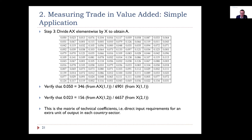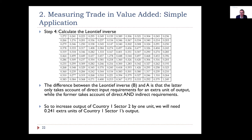This gives us matrix A — the matrix of technical coefficients, the direct input requirements for an extra unit of output in each country-sector. Step four: calculate (I - A) inverse — the famous Leontief inverse matrix B. This gives us the direct and indirect input requirements for an extra unit of output by country and sector, in contrast to matrix A which gives only the direct requirements.